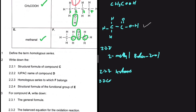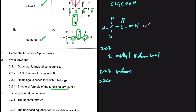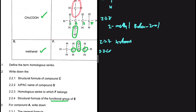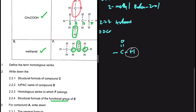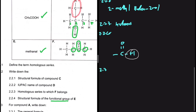For 2.2.4, we need the structural formula of the functional group of compound E. Many students draw the full structural formula of E rather than just the functional group — we must be careful. Compound E is an aldehyde. The functional group has a carbon double-bonded to oxygen; the key difference from a ketone is that this carbon is at the end of the chain, shown by the hydrogen attached to it, since hydrogen can only form one bond. That is the structural formula of the aldehyde functional group.